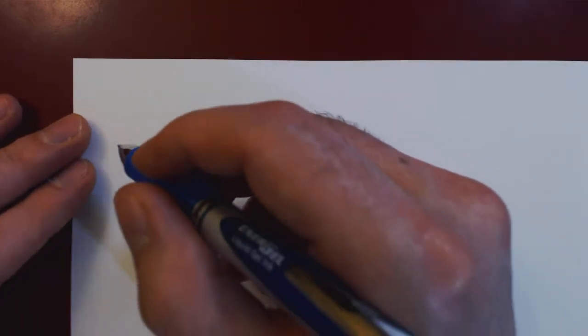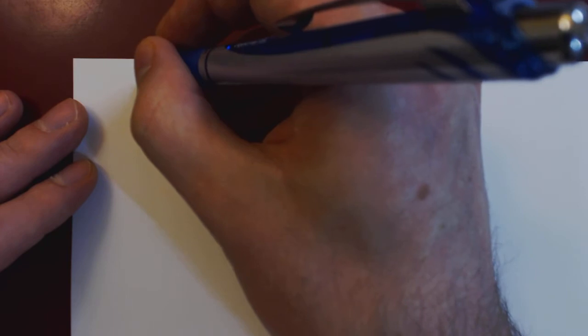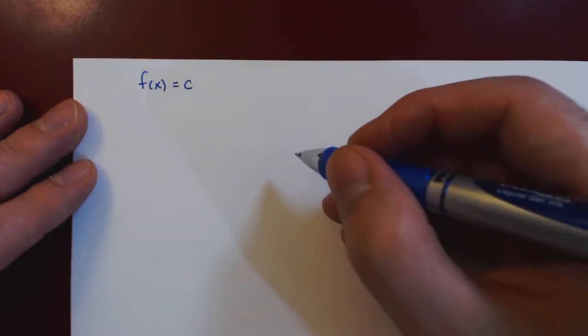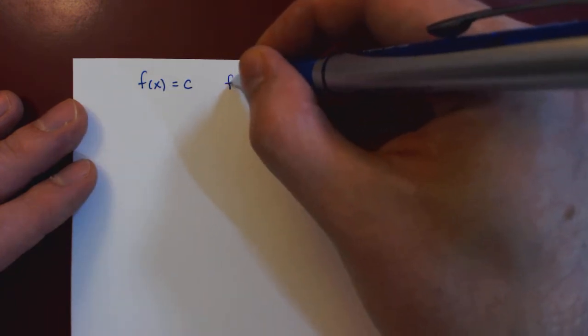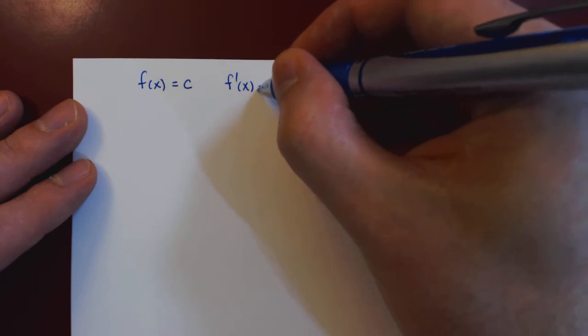Okay, so in this video, we will prove the constant rule of differentiation. If you recall, it states that if f of x is a constant function, so f of x is equal to c for all values of x, then the derivative of f is equal to 0.